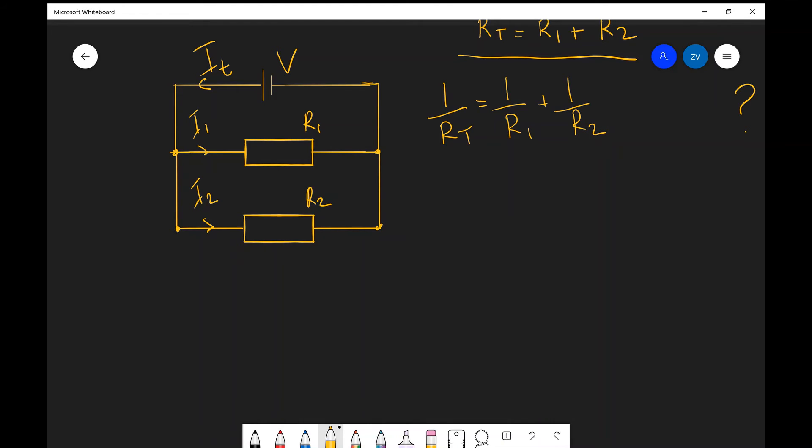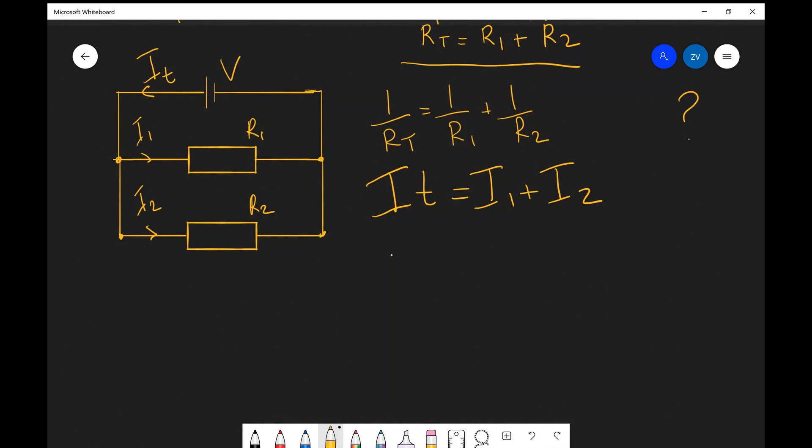Now due to Kirchhoff's first law, the sum of the currents entering a junction equals the sum of the currents exiting a junction. That means that I total has got to equal I1 plus I2. Once again we're going to apply Ohm's law. Remember Ohm's law is just V equals IR in general.